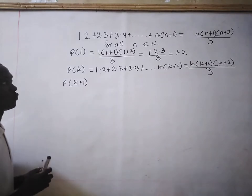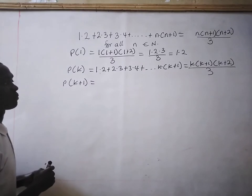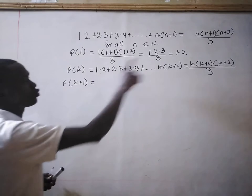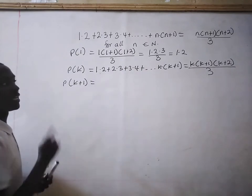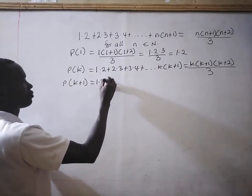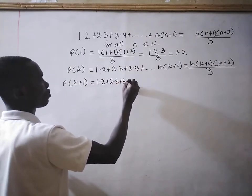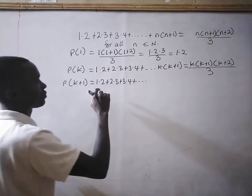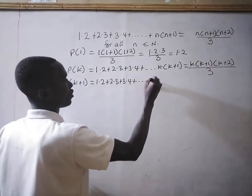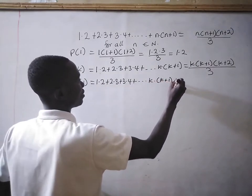Then we will use this inductive hypothesis — this assumption — to show that P(k+1) is also true. This means we have to sum from 1×2 up to the (k+1)th term. So let's do the summation: we have 1×2 + 2×3 + 3×4 + ... + k×(k+1), which is our inductive hypothesis assumption, plus the next term.